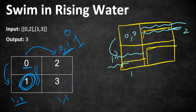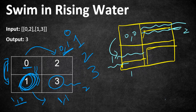Now we need to reach (1,1) where the elevation is 3. At time 2 all grids have water level 2, but we still cannot travel to (1,1) because its elevation is 3 and the water is only at 2. We wait one more second. At time 3 the water level reaches 3, so we can now swim from (1,0) to (1,1). The maximum time it took to travel from (0,0) to (1,1) is 3 — that is our output.